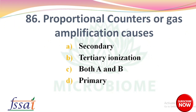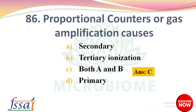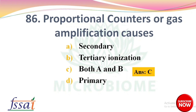Proportional counters — gas amplification causes — options: secondary ionization, tertiary ionization, both A and B, primary. The right answer: option C, both A and B, secondary and tertiary ionization. Next: dash counters where all isotopes including beta emitters induce complete ionization — options: Coulter, Geiger-Müller, both A and B, none of these. The right answer: option B, Geiger-Müller.